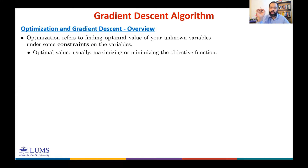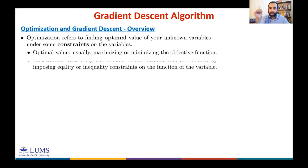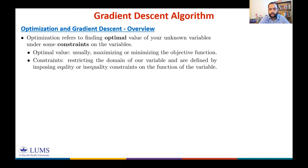The optimal value is the value of your variable for which your loss function or objective function is maximized or minimized. Constraints restrict the domain of our variable, and we usually define these constraints with equality functions or inequality functions by imposing equality or inequality constraints on the functions.